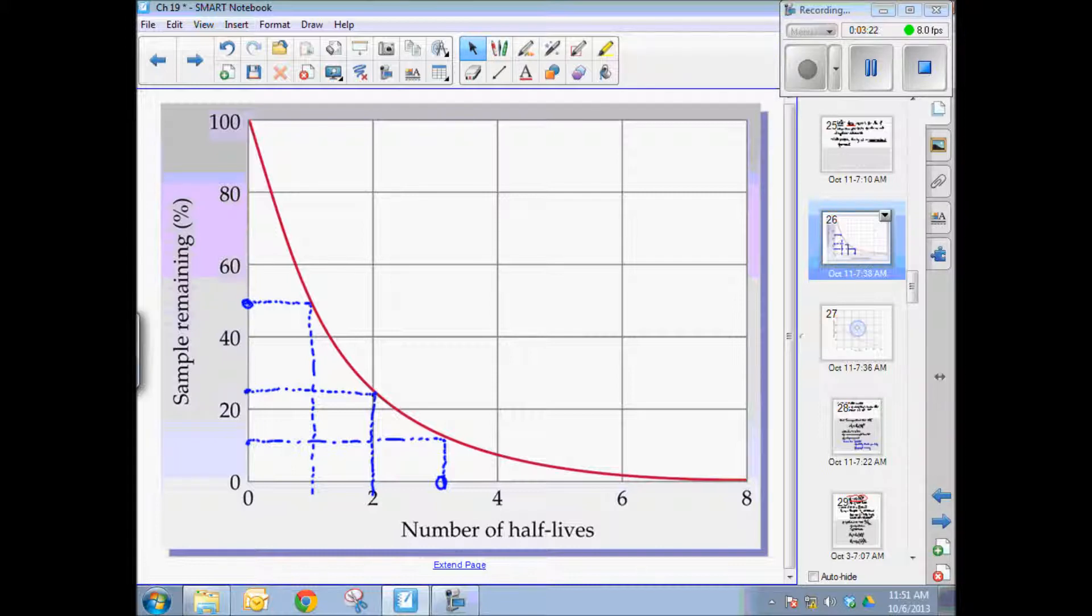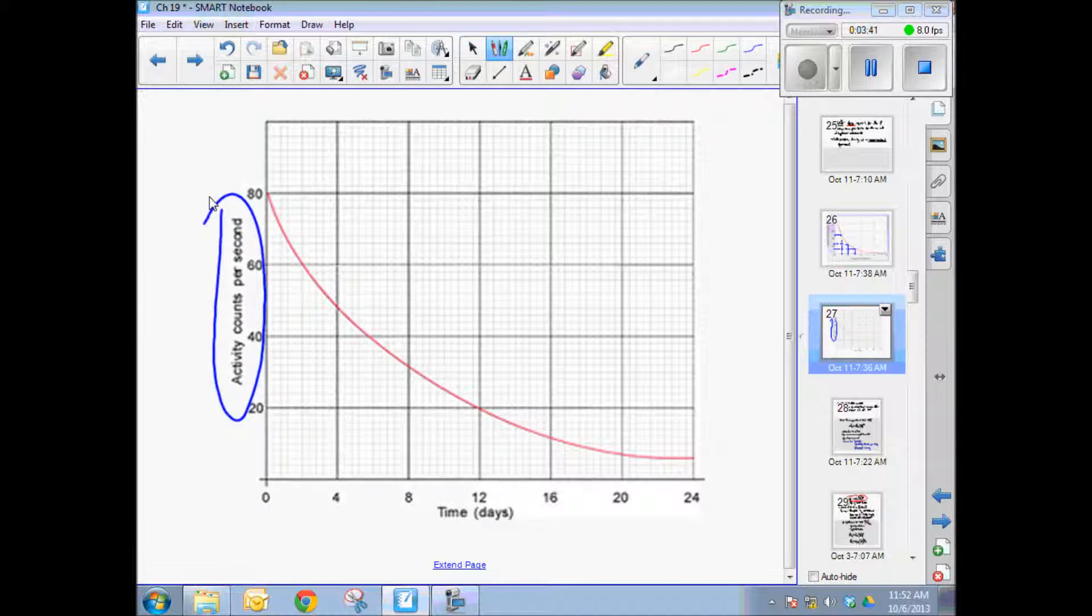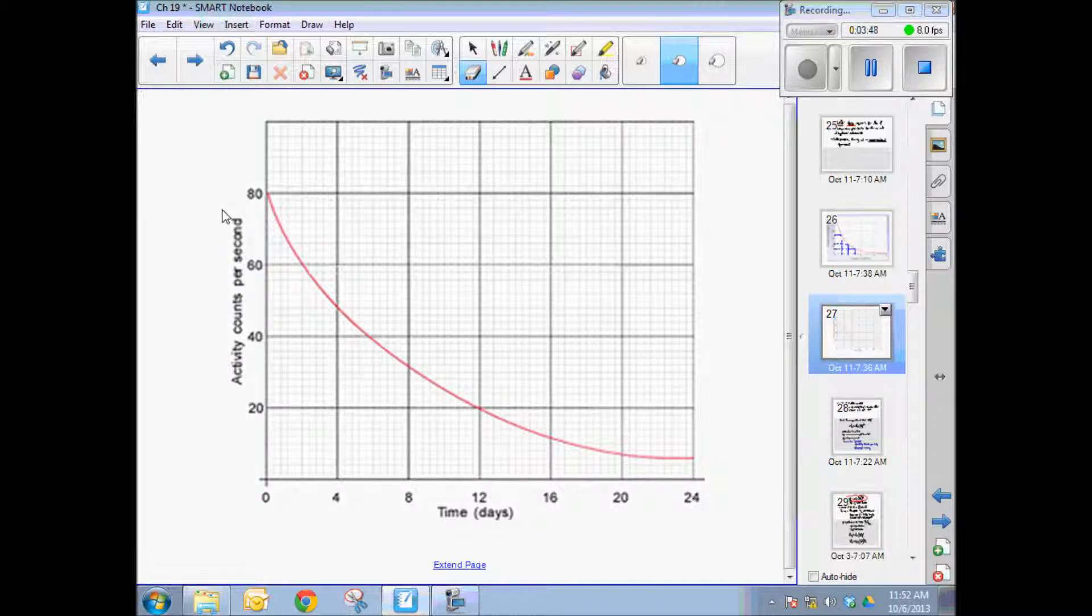So these are problems that can be solved graphically. Here's another graph of a decay of a radioisotopic element. However, there's a little difference on the axis. The y-axis is activity or counts per second, for example, on a Geiger counter. This would be the number of blips on a Geiger counter, which tells you the number of decays per second. So the original amount at time zero here is 80 counts per second.